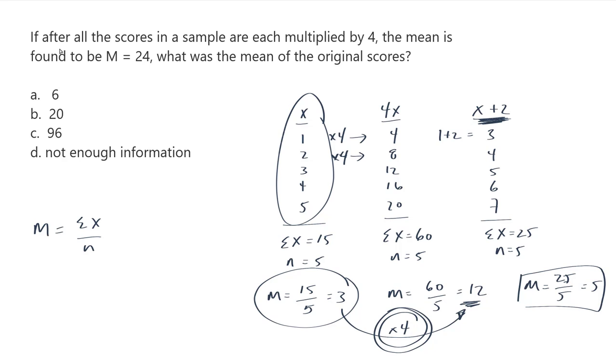We have to sort of work backwards here. If all of the scores in a sample are each multiplied by 4, the mean ends up being found to be 24. What was the mean of the original scores? So we know that this is what happens after you multiply everything by 4. It is 4 times the original size of the mean.